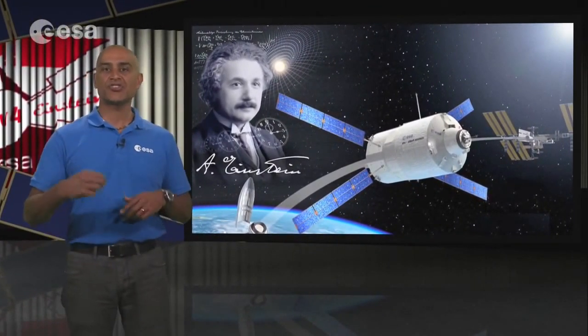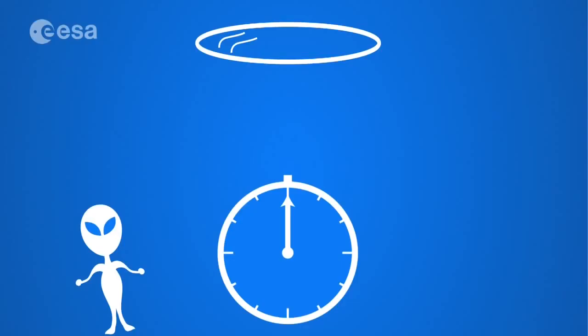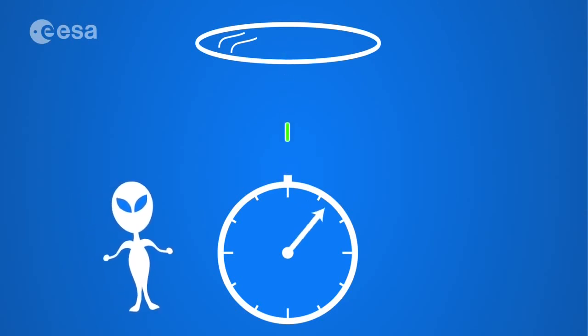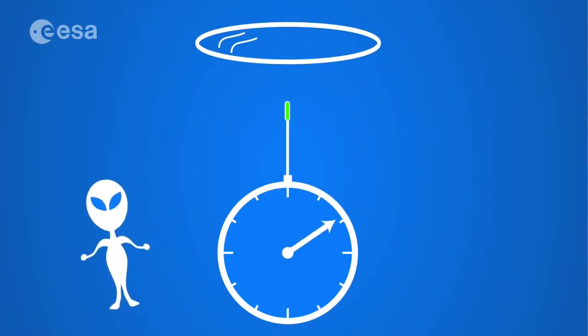He needed to change, to make relative, that which Galilean relativity had made absolute: the relationship between space and time. Imagine we have a clock that works by firing a laser pulse across a set distance to a mirror. In this clock, each time the beam returns to the source, we have one tick. The clock operator sees the beam moving back and forth in a straight line in his frame of reference.